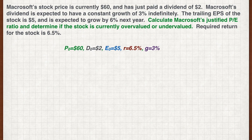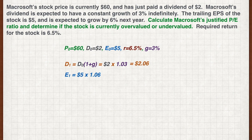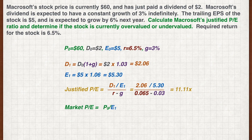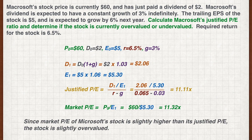The constant growth rate is 3%. Our first step is to estimate the following year's dividend — using the constant growth rate of 3%, we get $2.06. Next, we estimate the forward earnings; we're told it is expected to grow by 6%, so the forward earnings is $5.30. The justified P/E can be calculated using the formula we've just learned — plugging in the appropriate figures, we get 11.11 times. The market P/E is the current stock price against the forward earnings, and using forward earnings we get 11.32 times.